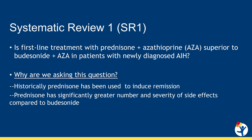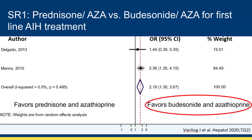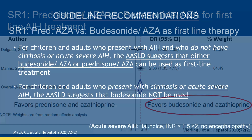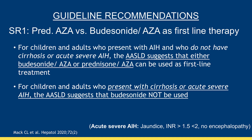The reason this is so important is that historically, prednisone with azathioprine has been used to induce remission. However, prednisone has a significantly greater number and severity of side effects compared to budesonide. The meta-analysis revealed that biochemical remission was more likely with the use of budesonide and azathioprine compared to prednisone and azathioprine, with an odds ratio of 2.19. Shown here is a forest plot summarizing the impact of the studies; if the average of all studies is greater than 1, it shifts to the right, favoring budesonide as shown by the diamond shape. Based on the systematic review and expert opinion, the final guideline recommendation is that for children and adults who present with autoimmune hepatitis in the absence of cirrhosis or acute severe disease, the AASLD suggests that either budesonide with azathioprine or prednisone with azathioprine can be used as first-line treatment.